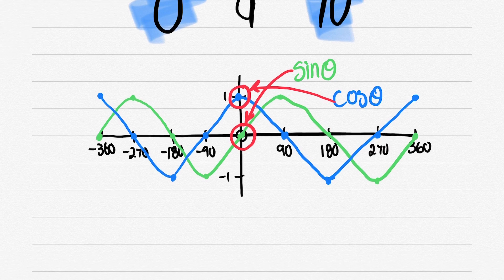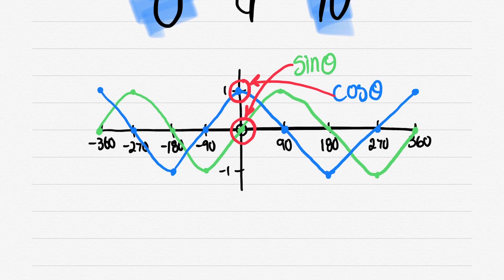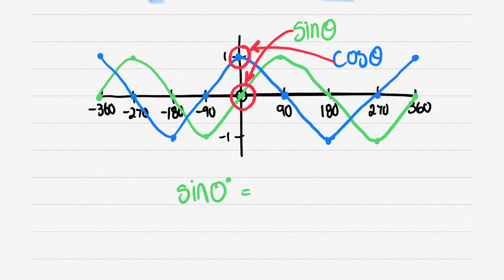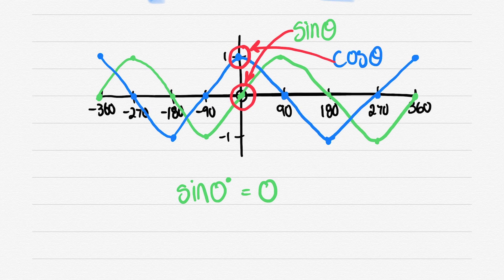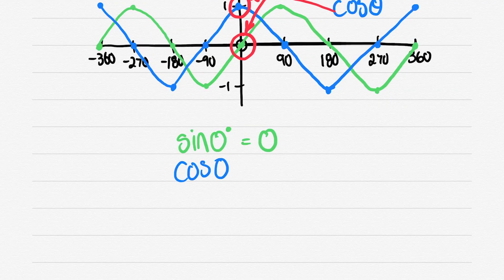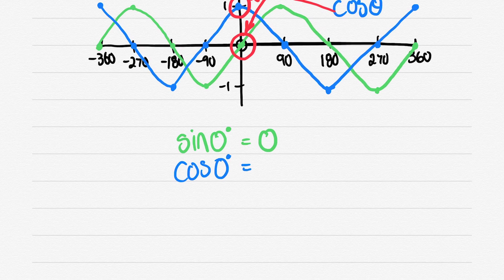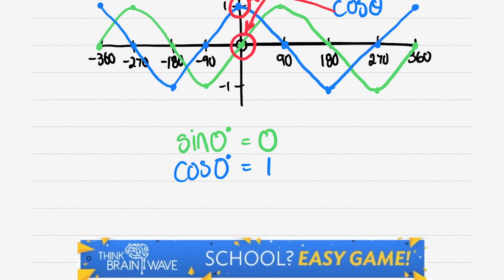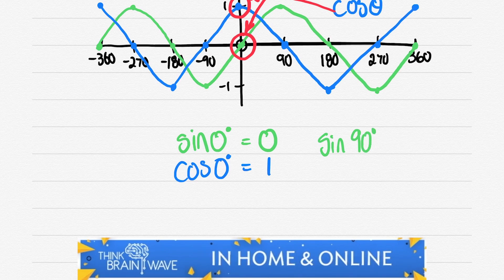Now if you look at the CAST diagram in one of the previous videos, you'll notice that cos and sin are vertically opposite in terms of the quadrants. Sin is the second and cos is the fourth. Just keep that in mind in the future, because when you shift an angle 90°, it turns from cos into sin.